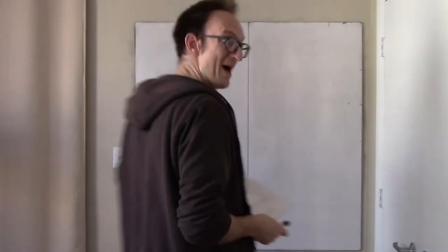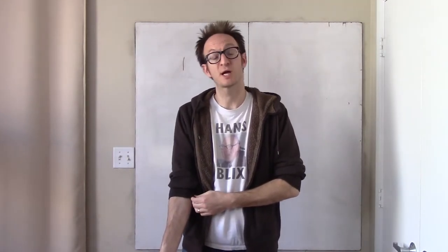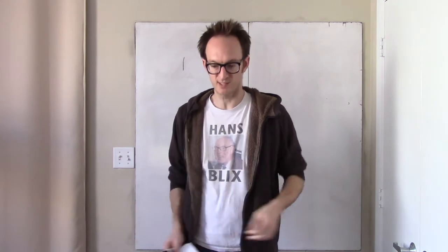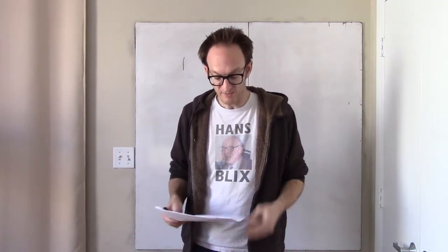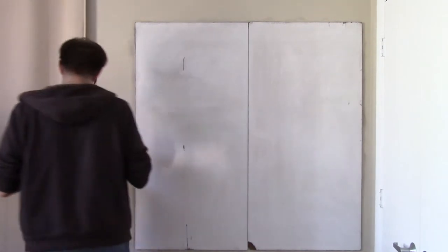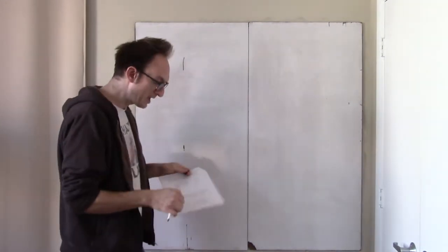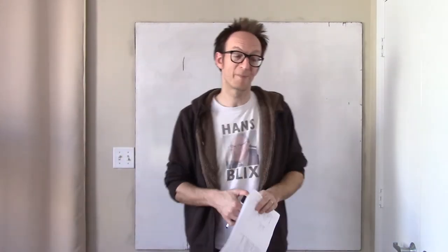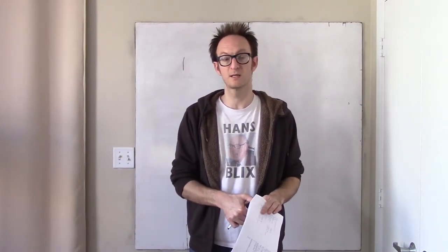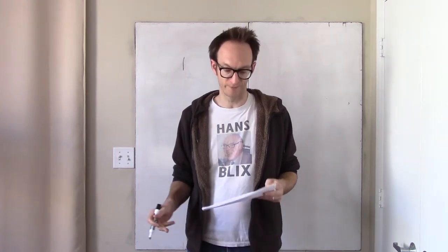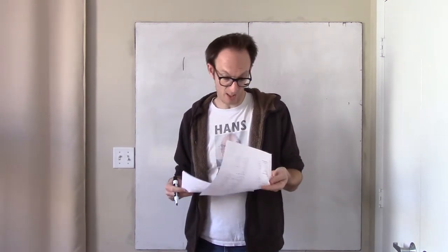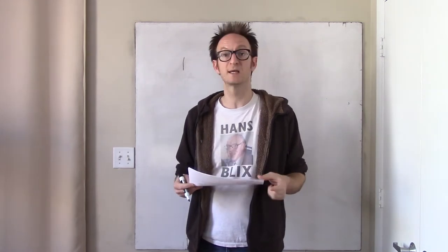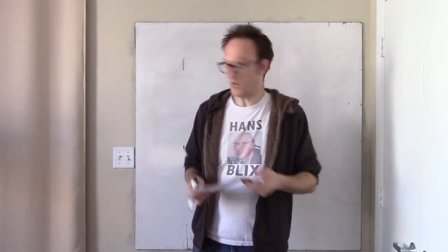Hello, welcome back. We continue with our exploration of natural deduction via the Fitch-style proof system. I'm going to do more problems from this packet for my own students. On Friday, we learned the next big kind of method in natural deduction, which is proof by contradiction. In this video, I'll do proofs 11 through 17, and these start to get pretty hard. Okay, let's go.